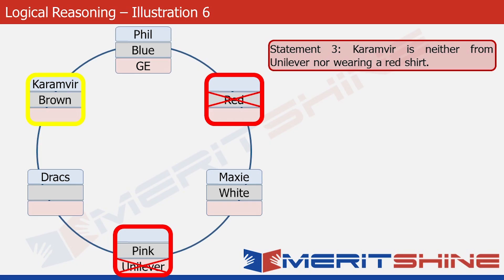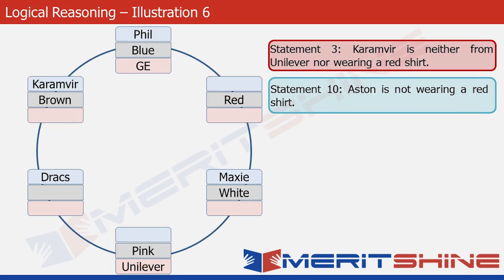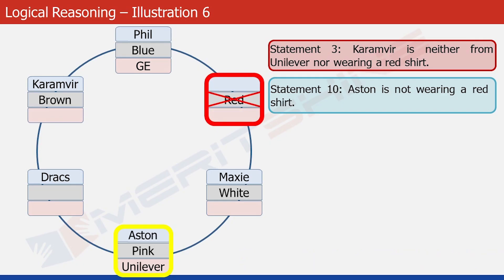Now we will use statement ten. There are two places to put Aston in the structure, both highlighted. But since Aston is not wearing a red shirt, that place is ruled out. So we put Aston's name in the remaining box.